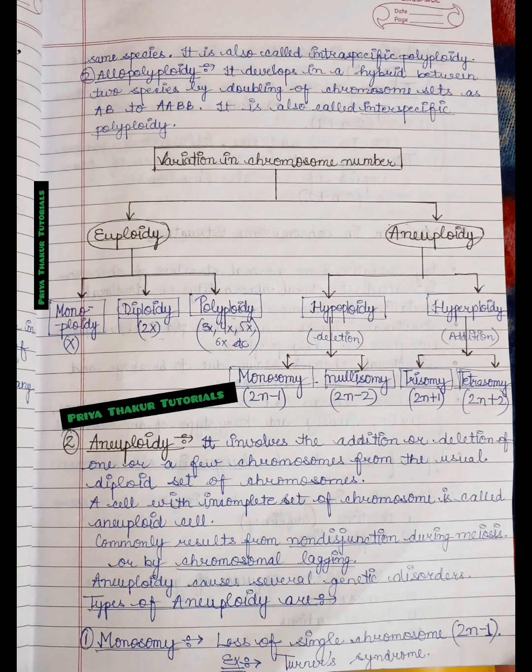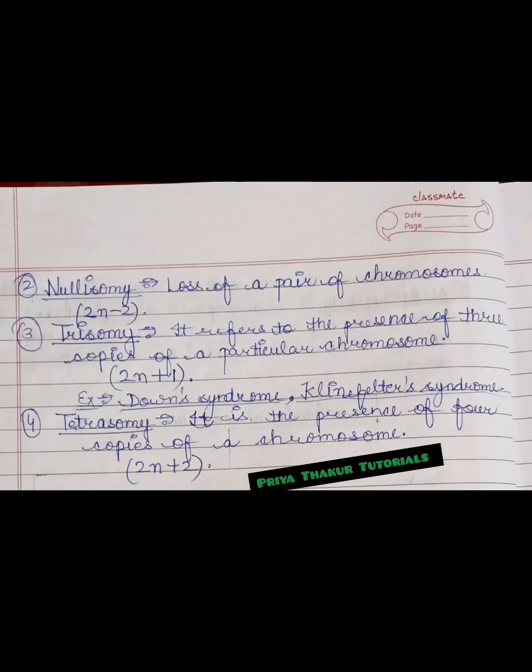The types of aneuploidy are: first one is monosomy. Monosomy is the loss of single chromosome, that is 2n minus 1. For example, Turner's syndrome. Second is nullisomy. It is the loss of a pair of chromosomes. Here there is a loss of one pair of chromosomes, and that is 2n minus 2.